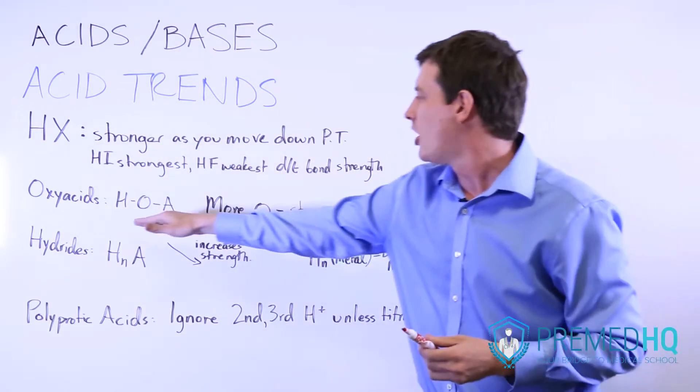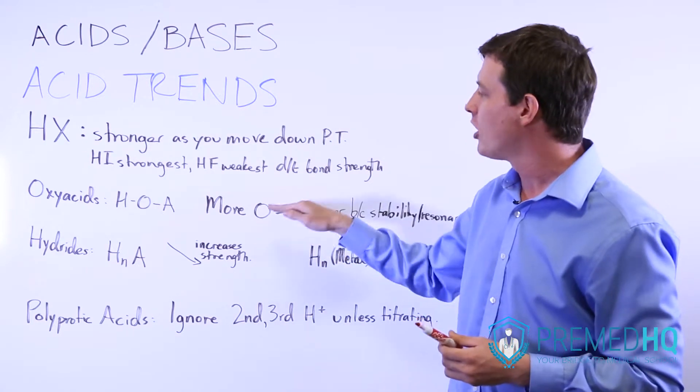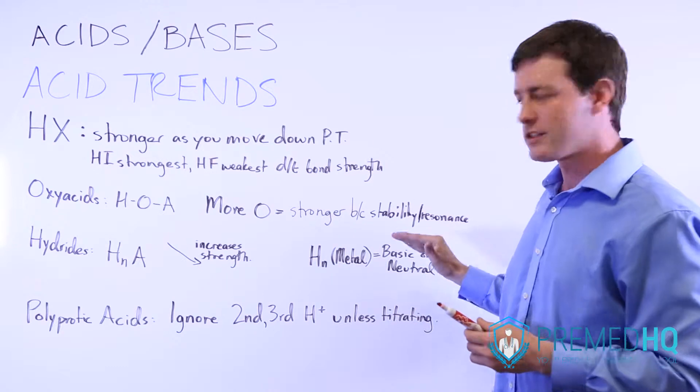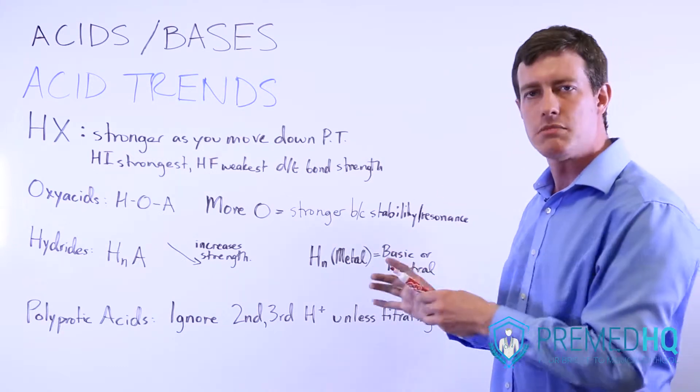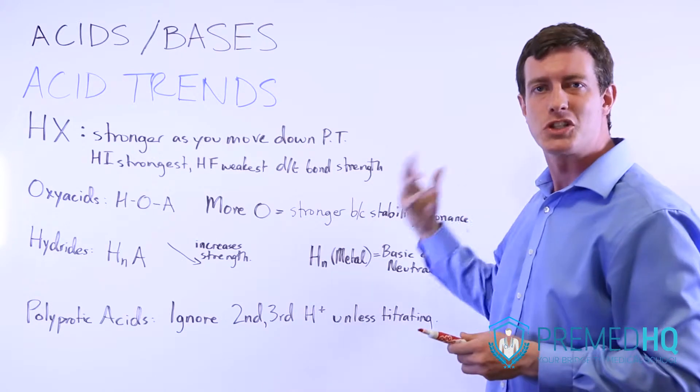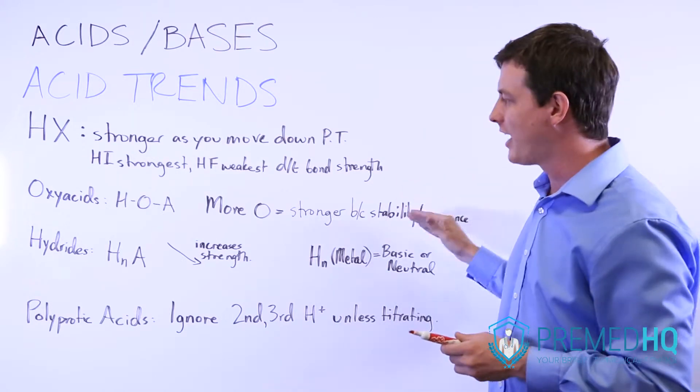So whenever you have an oxy acid, a good rule of thumb is the more oxygen that is in your compound, the stronger that acid will be because of the stability and potentially the resonance of the conjugate base, which contains a lot of oxygen atoms within it.